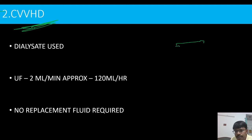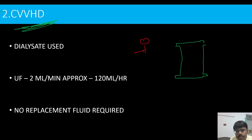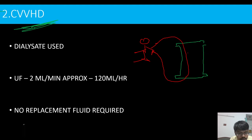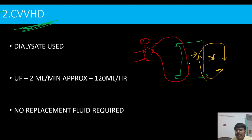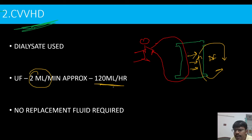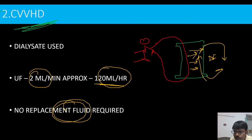In CVVHD (continuous venovenous hemodialysis), blood passes through a dialyzer while dialysate fluid circulates in the opposite direction, similar to intermittent hemodialysis. Diffusion is the primary mechanism for solute clearance. The ultrafiltrate removal rate is approximately 2 ml per minute, which is about 120 ml per hour. No replacement fluid is required here because the ultrafiltrate is removed at a lower rate and no volume replacement is needed.